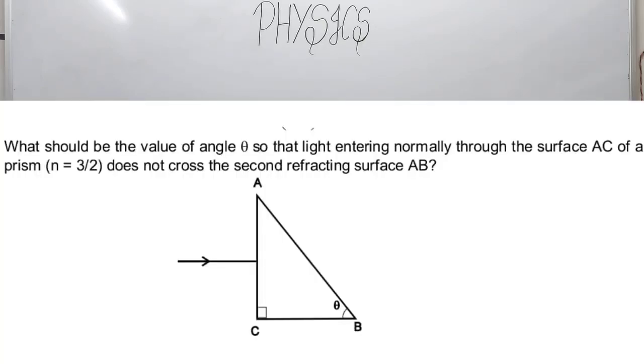Hello everyone. Today's question is related to the topic of total internal reflection and the critical angle. The question is: what should be the value of angle theta so that light entering normally through the surface AC of a prism with refractive index μ = 3/2 does not cross the second reflecting surface AB? A diagram is also given in the question showing a ray normally striking the surface AC.